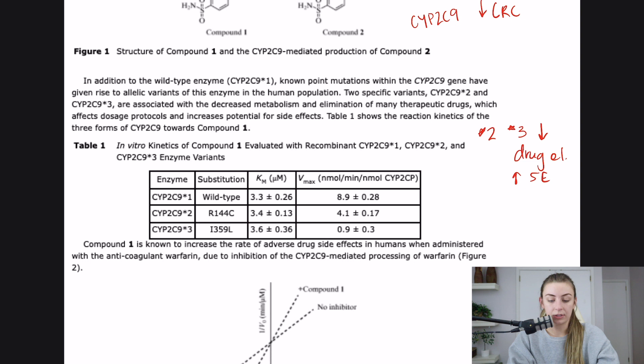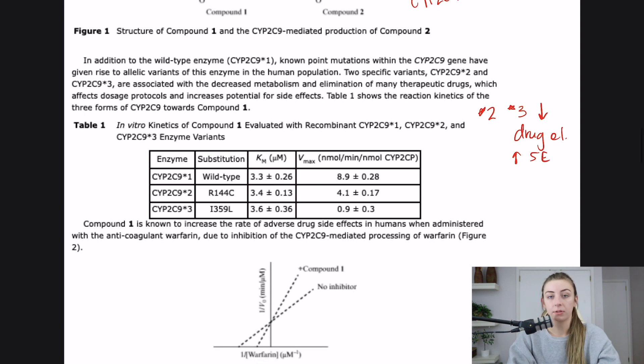Table one shows the reaction kinetics of the three forms of CYP2C9 towards compound one. So what do I expect going into this figure? I expect the variants to not eliminate compound one as well. In vitro kinetics of compound one evaluated with recombinant CYP2C9 one, two, and three enzyme variants. So I see that the KM is pretty comparable, but the Vmax is what has a big drop off between the variants. And then it tells us our substitution here.